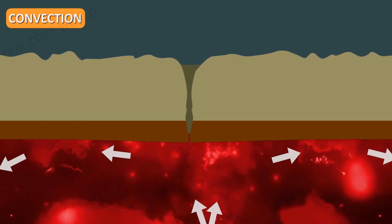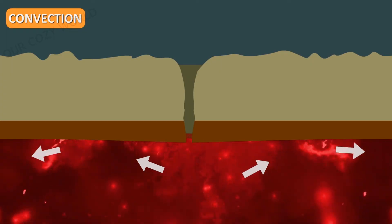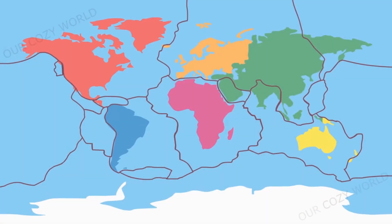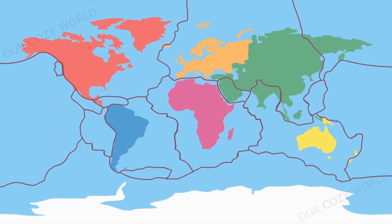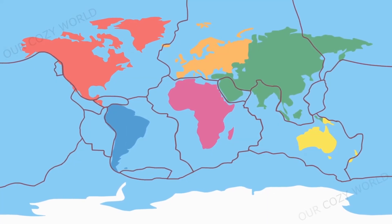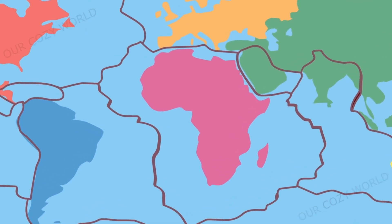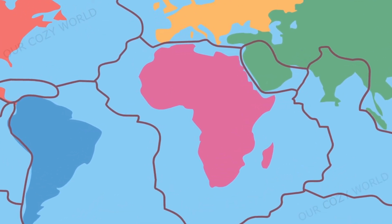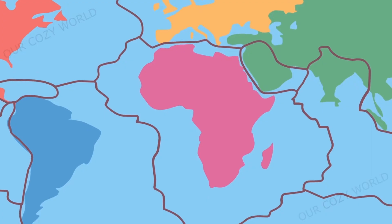This is the main point of the theory of plate tectonics. In other words, it's not the continents that drift around the Earth's surface as Wegener assumed, but the tectonic plates covering the entire Earth move along the asthenosphere. Since all the plates are tightly adjacent to each other, the movement of any of them affects the surrounding plates, causing them to gradually move.